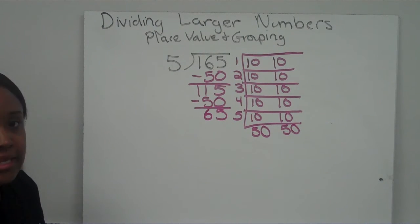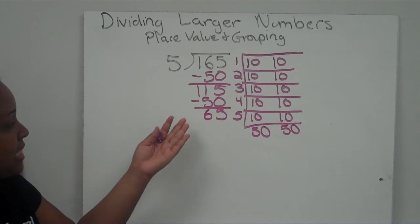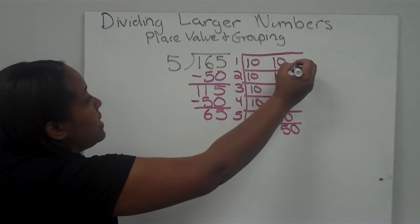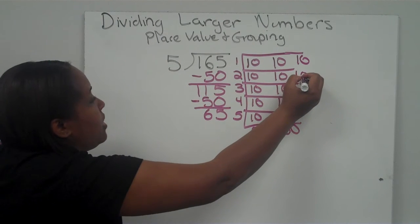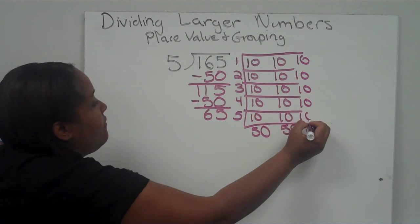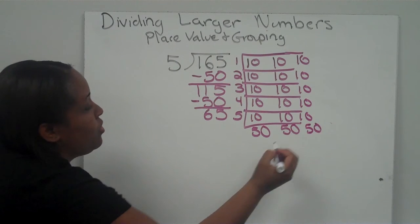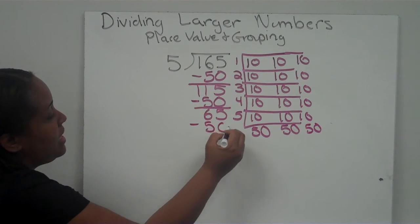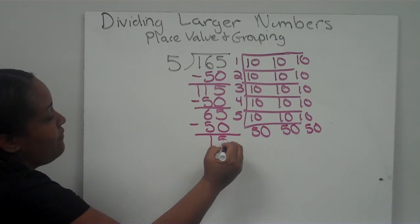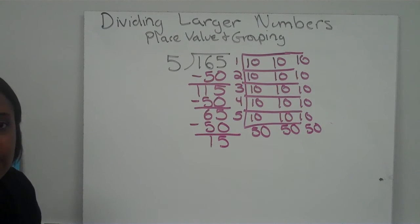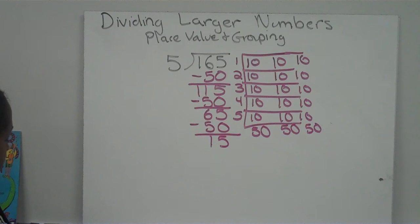Could I do it again? Yes, because 65 is still more than 50. So I pass out another ten to each group: 10, 20, 30, 40, 50. I subtract 50, and 65 minus 50 is 15. Could I do tens again? No, because I don't have enough. So now I'm going to move on to ones.